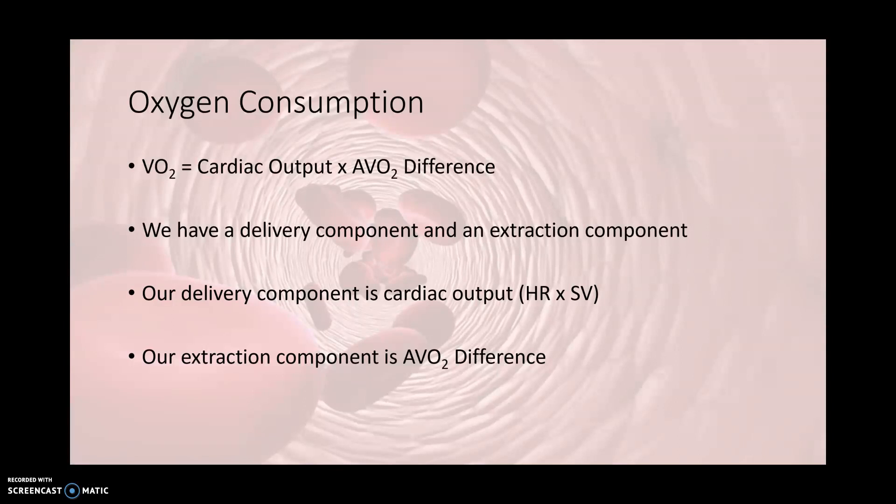So what is VO2? VO2 is oxygen consumption. That is cardiac output times the AVO2 difference — that is the equation. We have a delivery component and an extraction component. Our delivery component is cardiac output, which is heart rate times stroke volume — that's how we're bringing blood to the working area. Our extraction component is at the level of the tissues, which is our AVO2 difference.